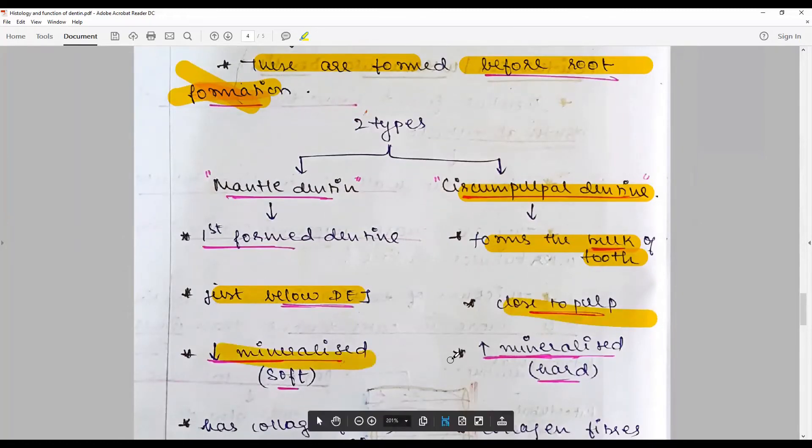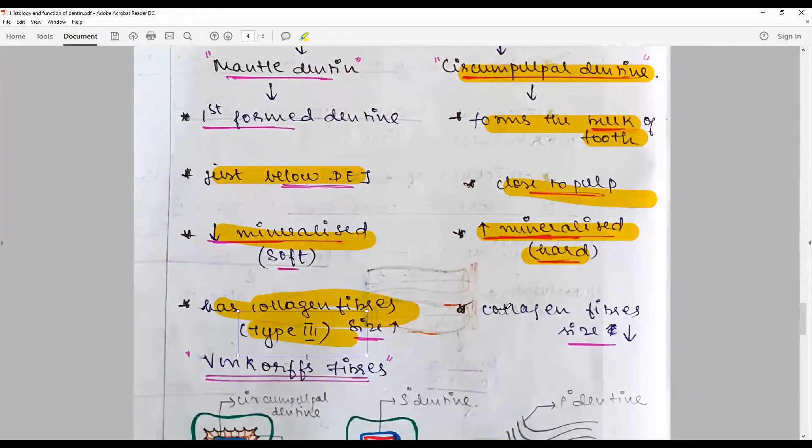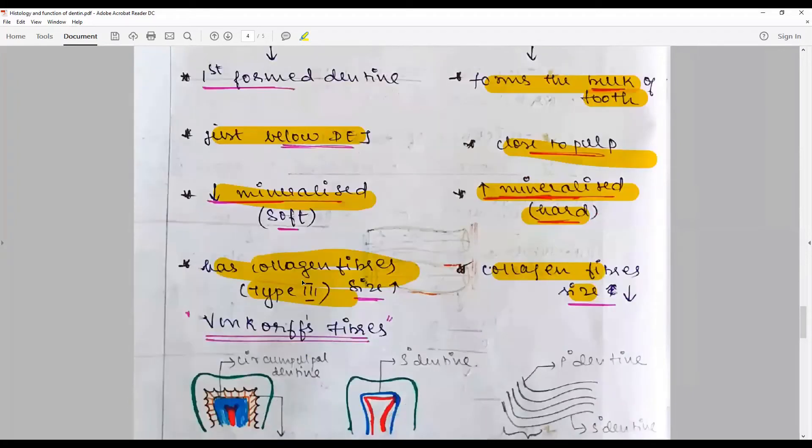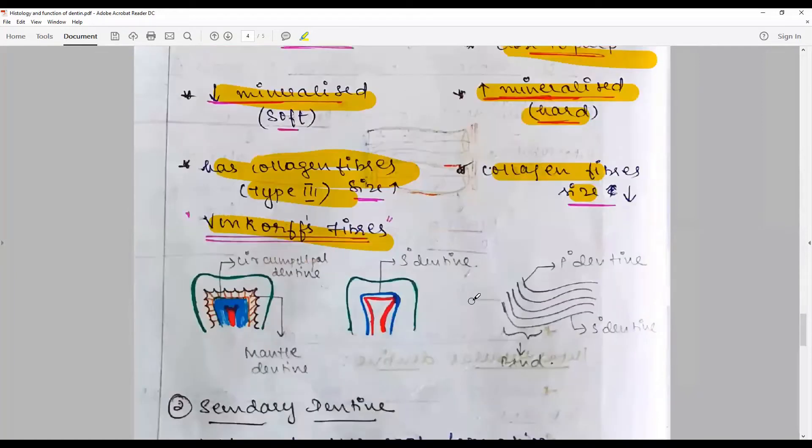Circumpulpal dentin is relatively soft, whereas mantle dentin is highly mineralized. Mantle dentin has typical type 3 collagen with increased size, whereas the collagen fiber size is decreased in circumpulpal dentin. In the mantle dentin we have what is called Von Korff fibers.